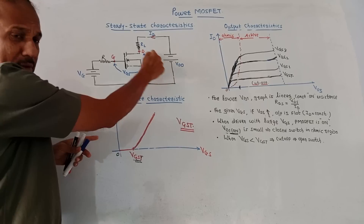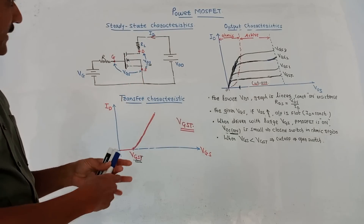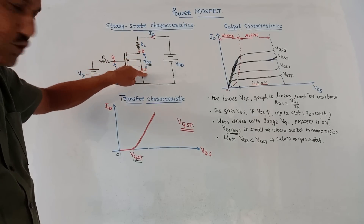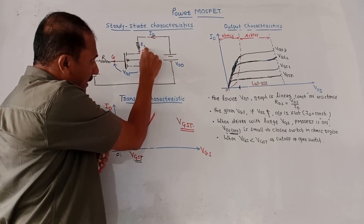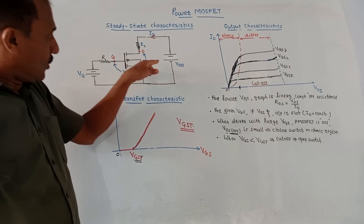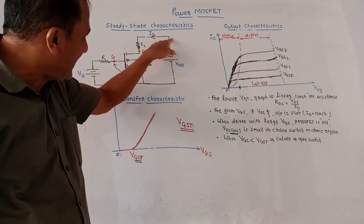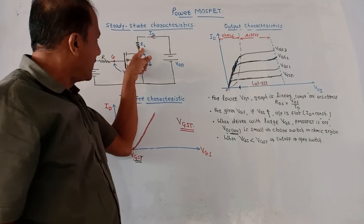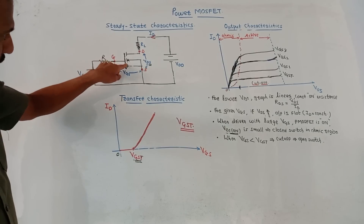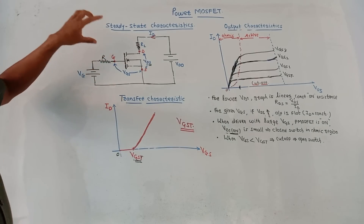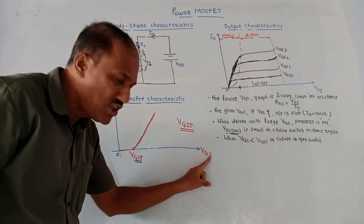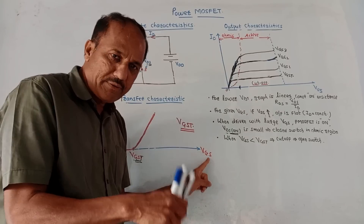This is the circuit diagram used to obtain the transfer and output characteristics. This is the symbol of the MOSFET with gate terminal, drain terminal, and source terminal. The voltage between drain and source is VDS, and the voltage between gate and source is VGS. To the drain terminal, voltage source VDD is connected. RL is the load resistance with corresponding drain current ID. VG is the voltage connected to the gate terminal through resistance R. The first plot is the transfer characteristic, which is a graph of ID versus VGS.